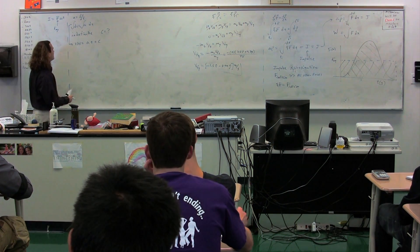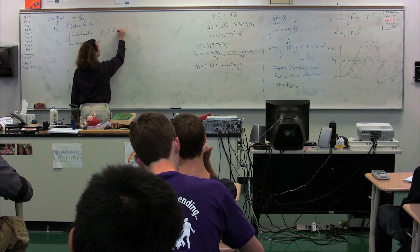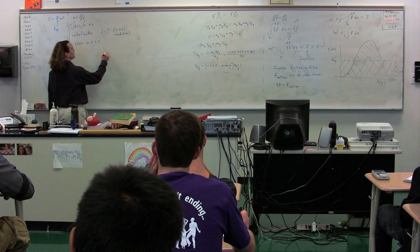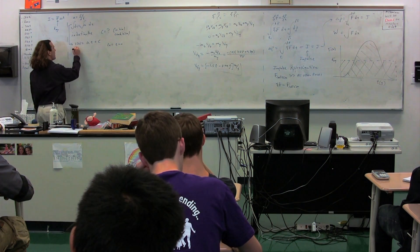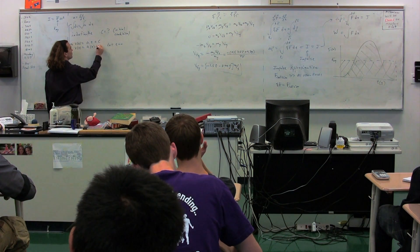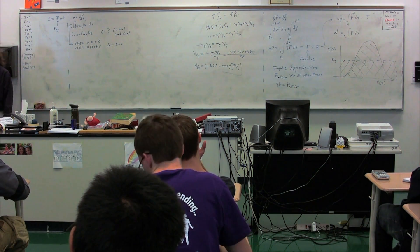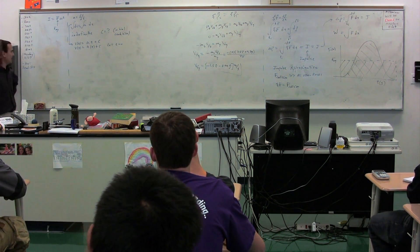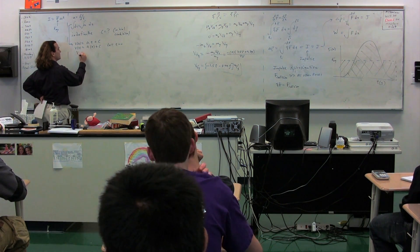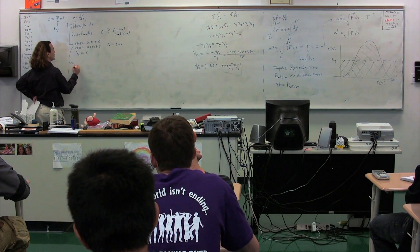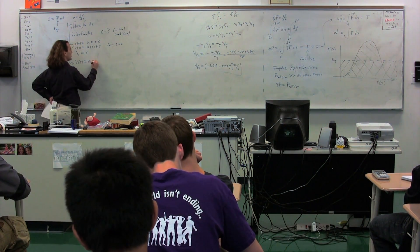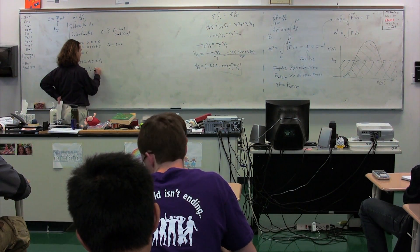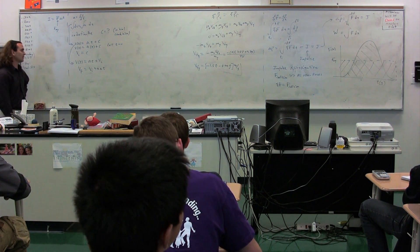It turns out that c is the initial condition, and the way we can figure out what that is, we set the time equal to zero. So the velocity at time t equals zero is the acceleration times zero plus c. C in this particular case is the initial velocity, because v at time t equals zero is the initial velocity — that's equal to c. So the velocity as a function of time is equal to the acceleration times time plus the initial velocity, or: the final velocity equals the initial velocity plus acceleration times delta t. Which I think you've seen before.